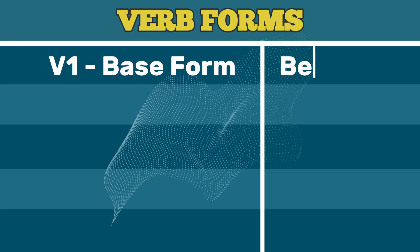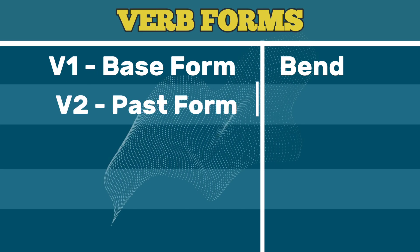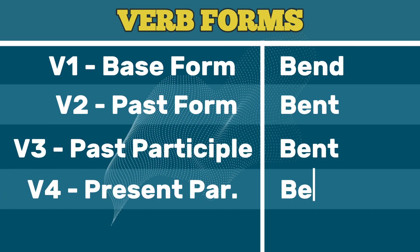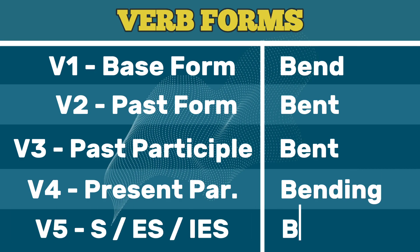V1 base form: bend. V2 past form: bent. V3 past participle: bent. V4 present participle: bending. V5 third person singular series: bends.